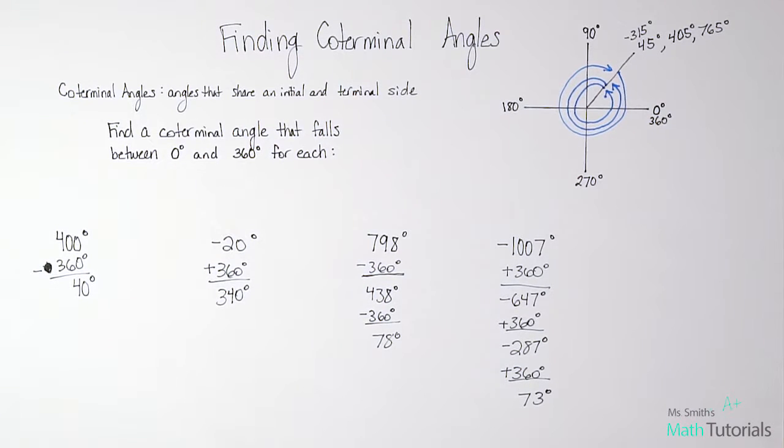So as you see from doing this, all we really are doing is deciding, are we going to add 360 or subtract 360? And then we're just doing it as many times as we need to do it until we get a coterminal angle that falls between zero and 360 degrees. So it's not too hard. It's just a matter of making that decision.